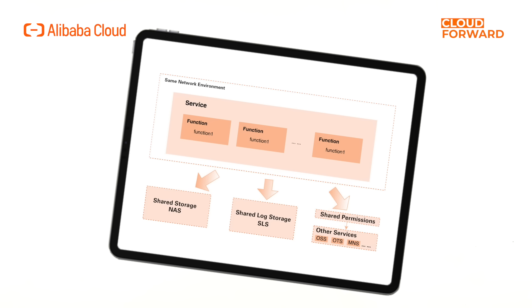Network configuration and log store for logging. Although the functions may have different configurations — for example, some functions in the same service may have a memory of 3 GB while others have 512 MB, some functions may be written in Python while others in Node.js. Certainly, if the application is very complex, one application can also correspond to multiple services and there is no strong binding relationship.